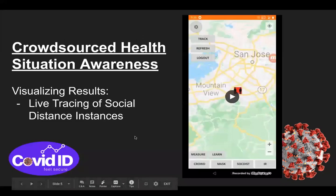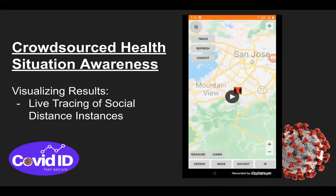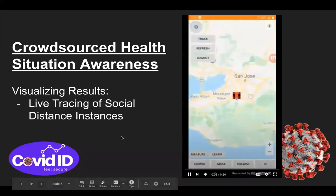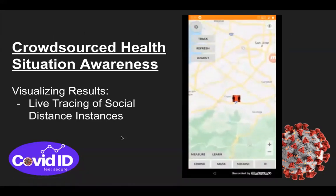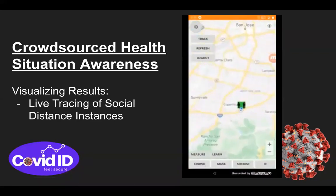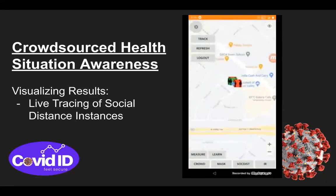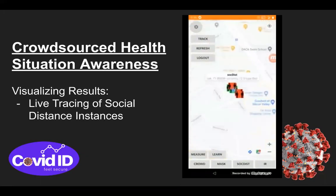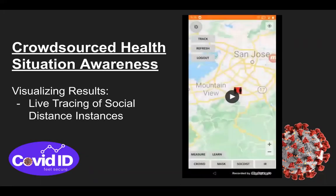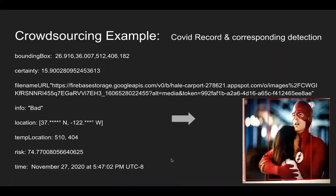We are also live tracing the social distancing using our application, giving users awareness around the neighborhood. A live demonstration of this can be seen here. The red color icon indicates a bad practice while a green one indicates a good practice, and we can also see the location being traced. If we click on one of the icons, we can see the risk and certainty involved. For neighborhood practice monitoring, we also keep track of records generated by the application in the background, along with the time and location.